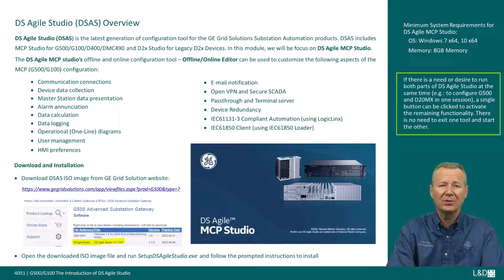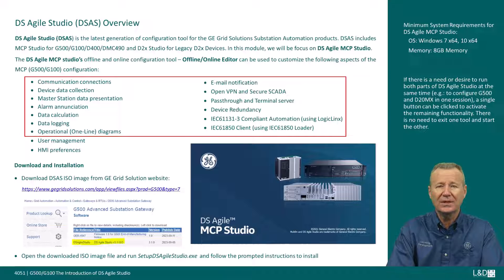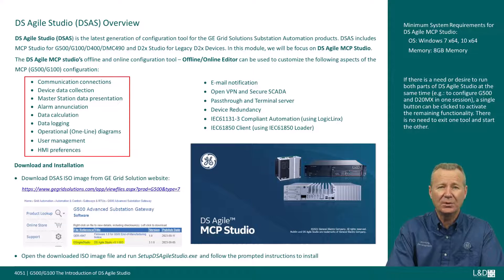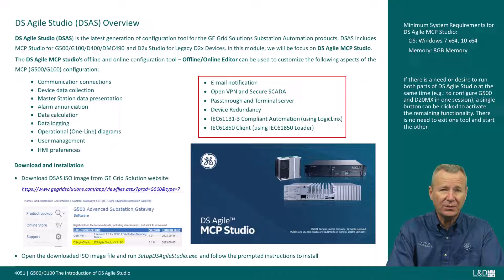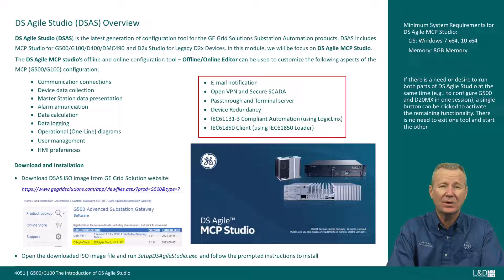The user can use DS Agile MCP Studio's offline and online configuration tool to customize the following aspects of the MCP G500, G100 configuration: communication connections, device data collection, master station data presentation, alarm enunciation, data calculation, data logging, operational one-line diagrams, user management, HMI preferences, email notification, open VPN and secure SCADA, pass-through and terminal server, device redundancy, IEC 61131-3 automation using logic links, and IEC 61850 client using IEC 61850 loader.